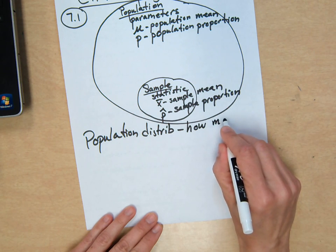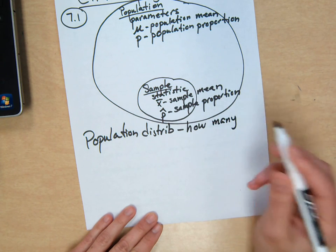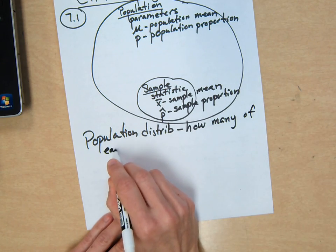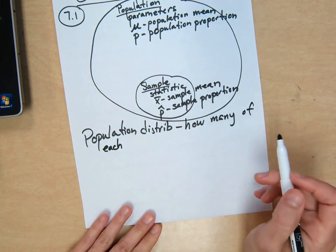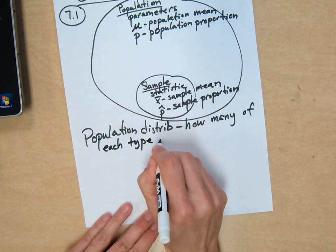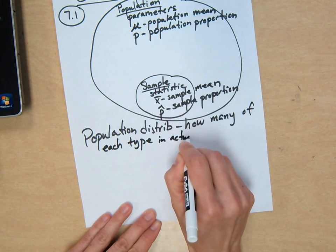Because it would be too time consuming to figure that out to do a whole census. How many of each type in the actual, actual population.